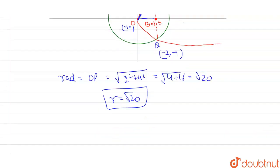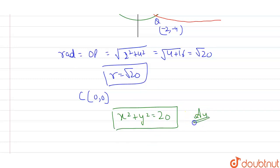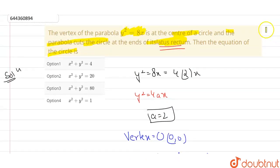I now have center (0, 0) and radius √20. The equation of the circle is x² + y² = r², which gives x² + y² = 20. Looking at the options, option 2 is correct: x² + y² = 20.